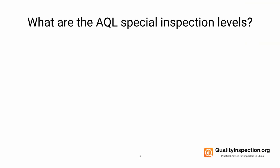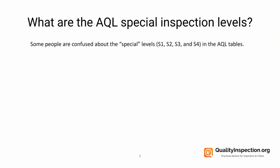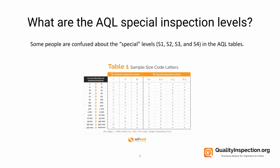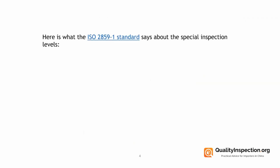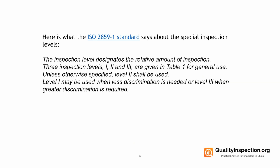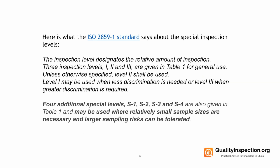So what are the special inspection levels? Some people confuse these with the general inspection levels that we see on the left-hand side of table 1, but we're looking at the special inspection levels today. Here's what the standard says about the levels: there are four additional special levels, S1 through S4, also given in table 1, and may be used where relatively small sample sizes are necessary and larger sampling risks can be tolerated.